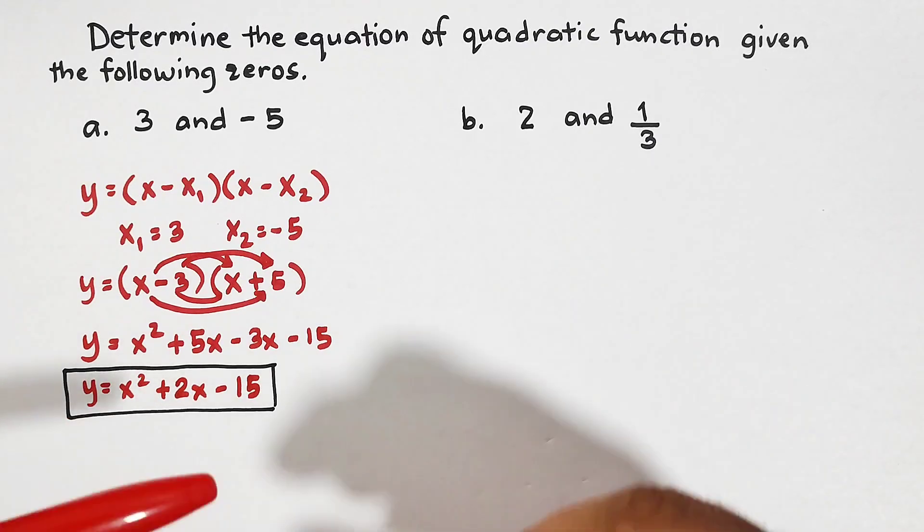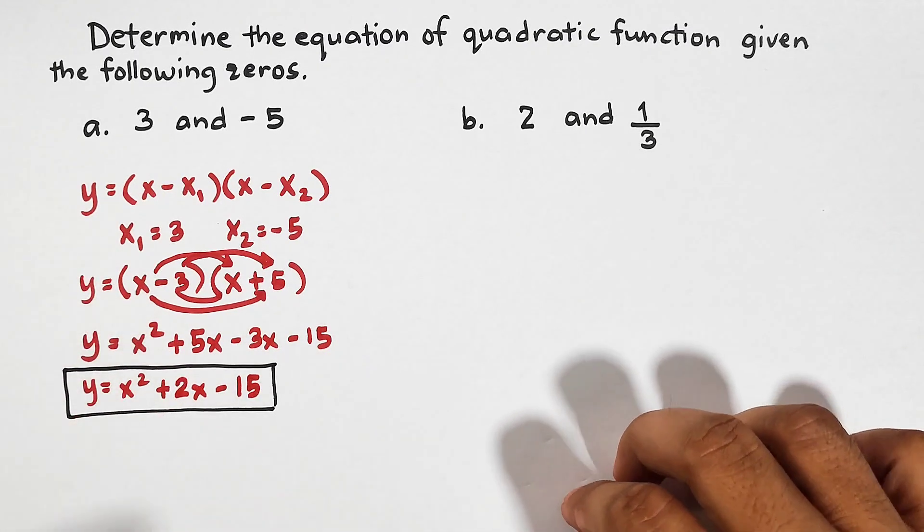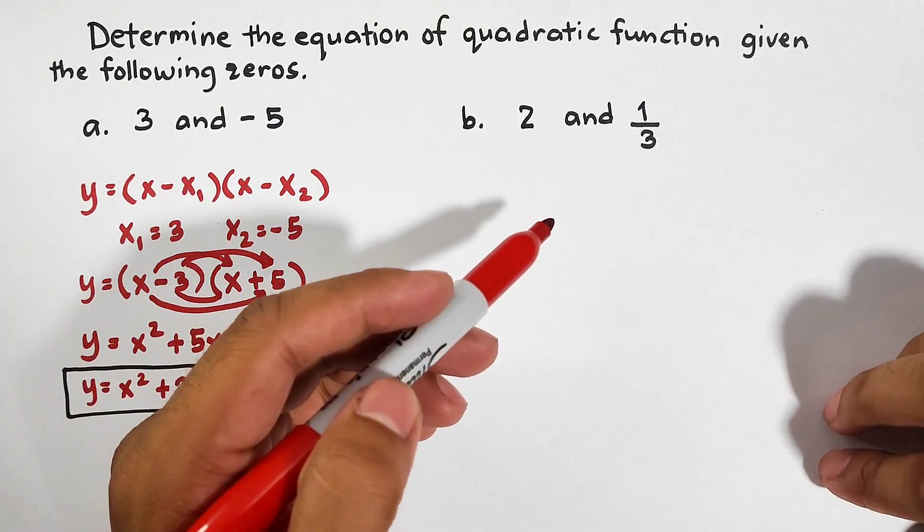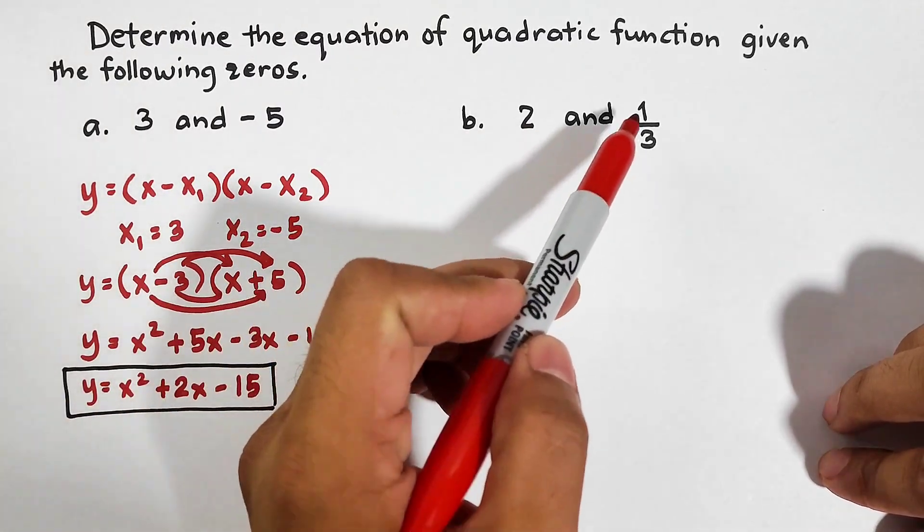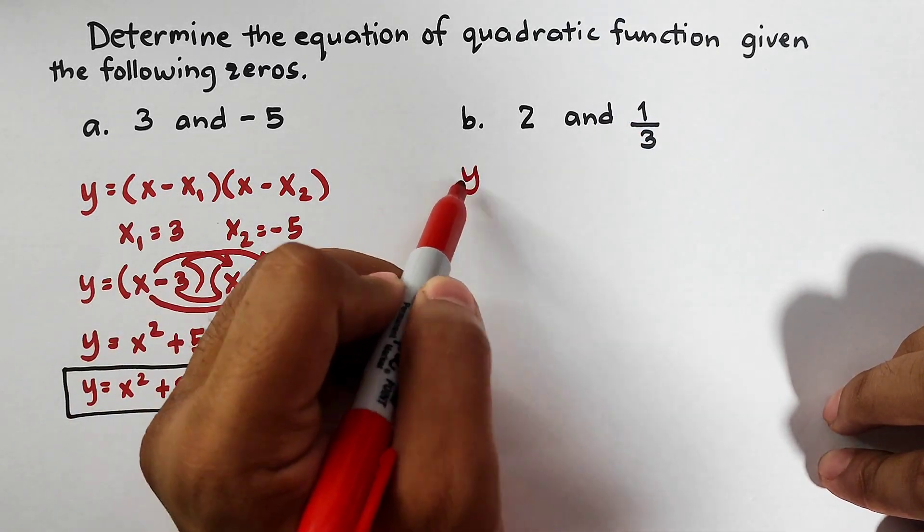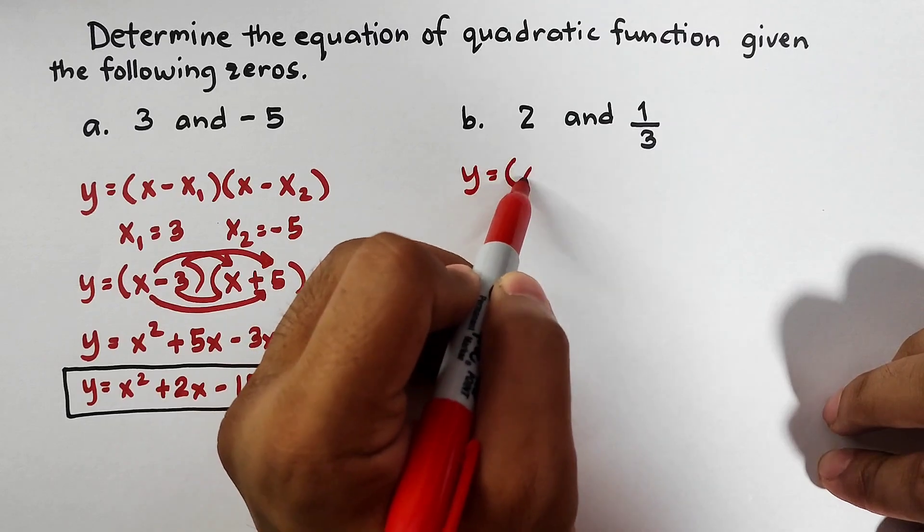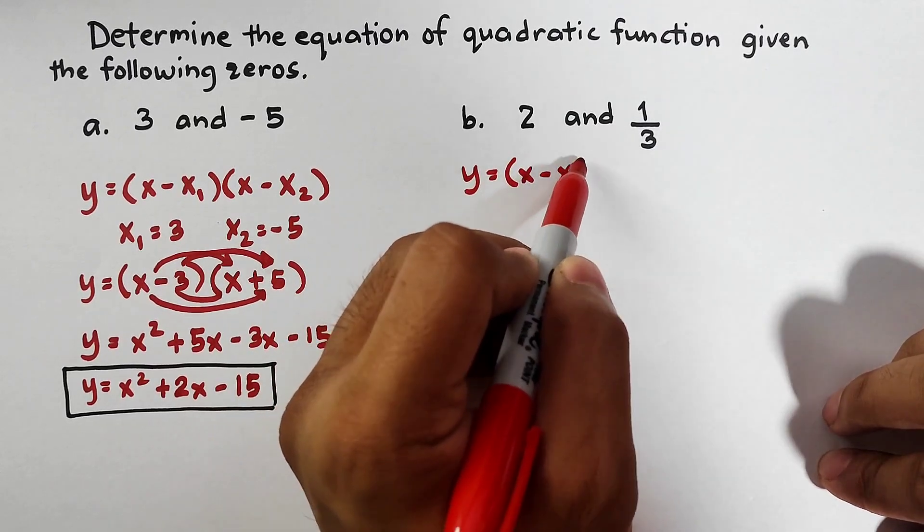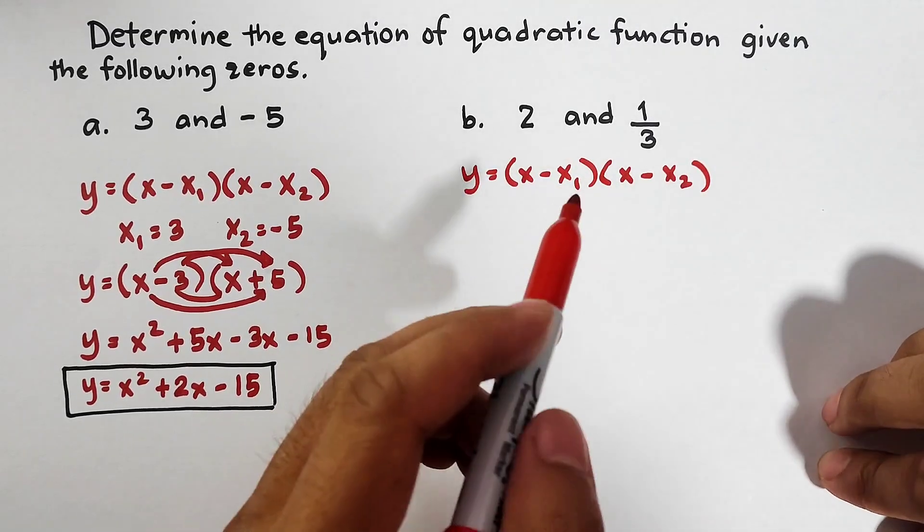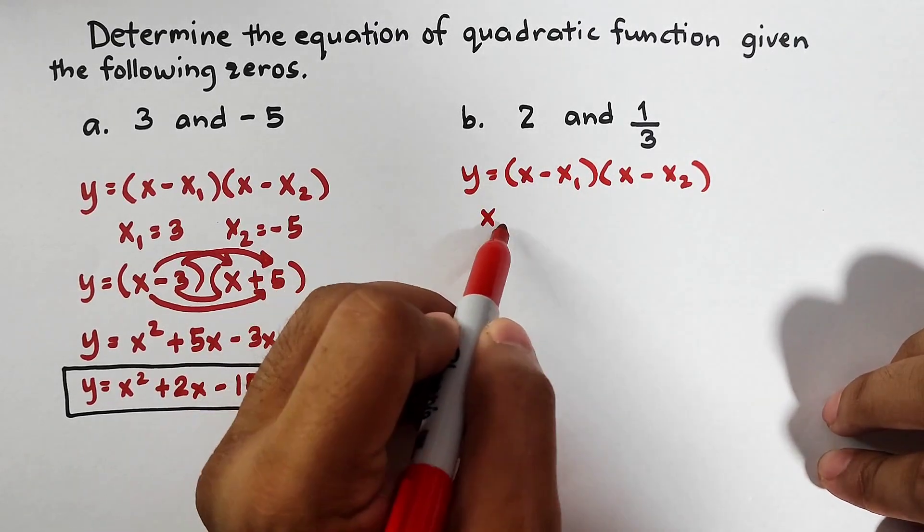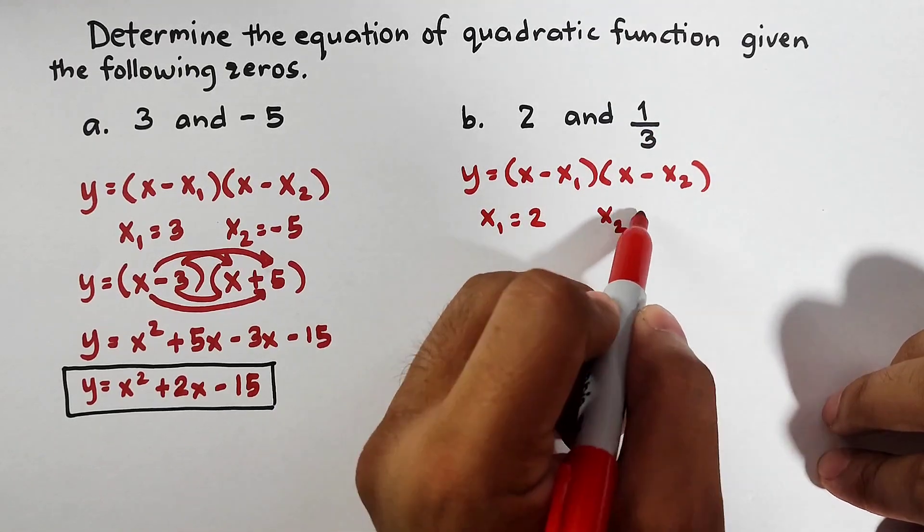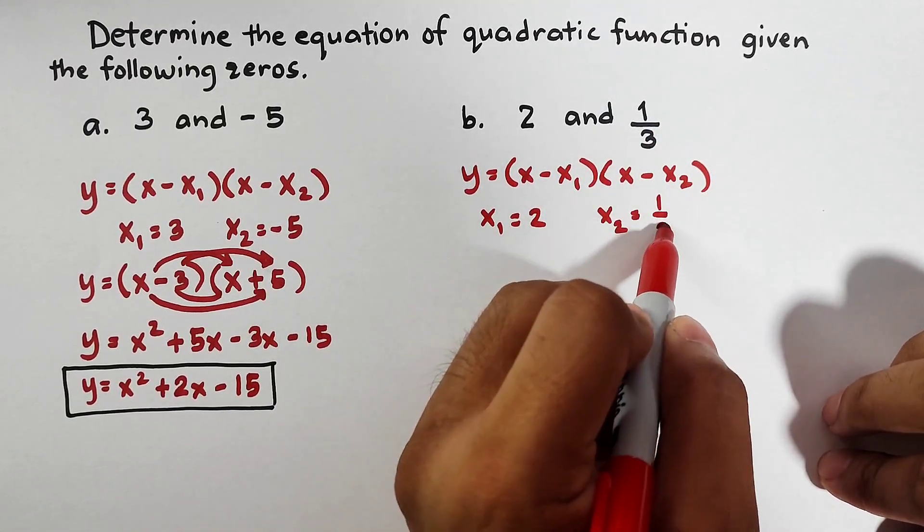Okay guys, I hope you learned something from example number 1. Now, let's move on with example number 2. For number 2, the zeros are 2 and 1 third. Here, using the same formula, let me copy the formula. y is equal to x minus x sub 1 times x minus x sub 2. The value of x sub 1 is 2. The value of x sub 2 is equal to 1 third.